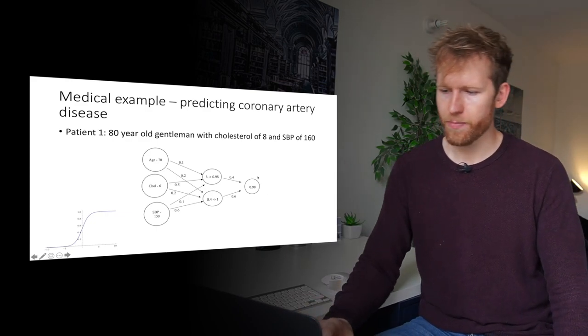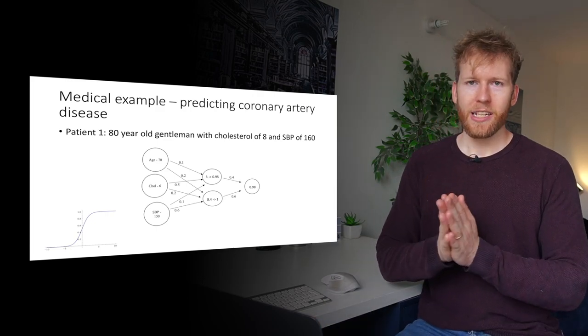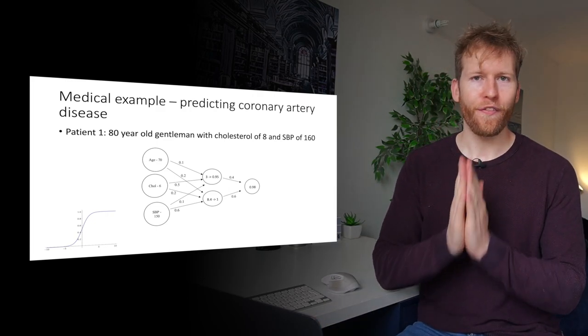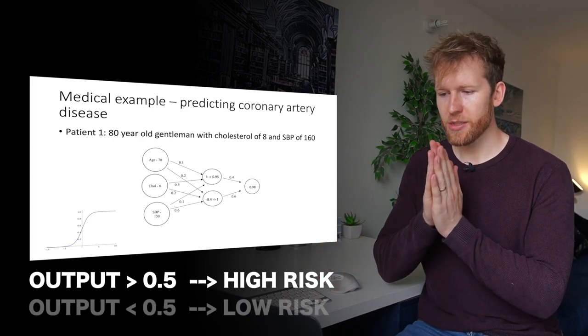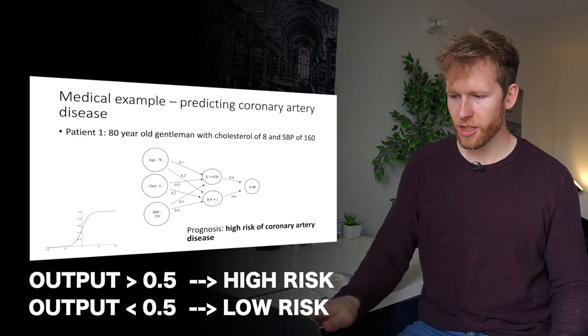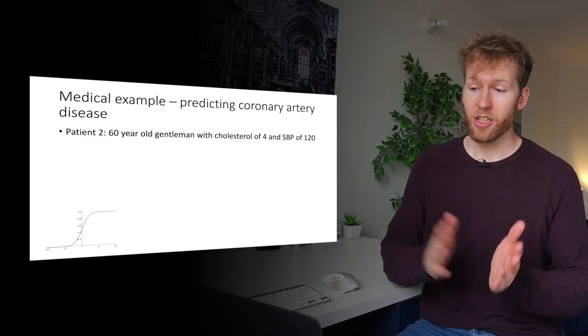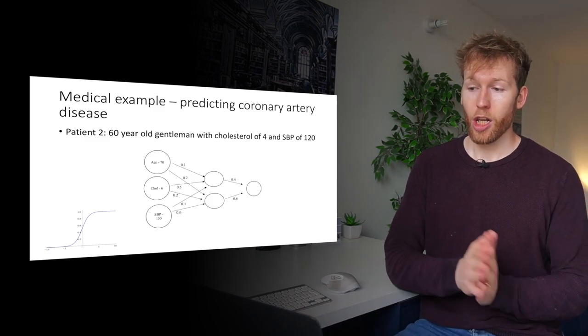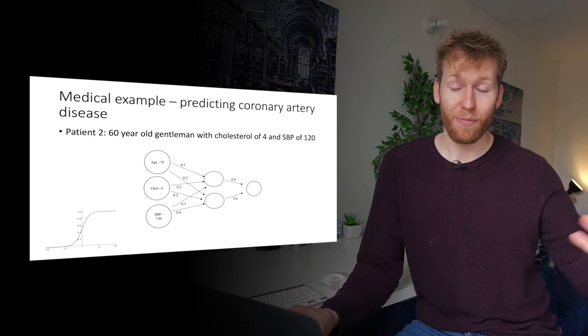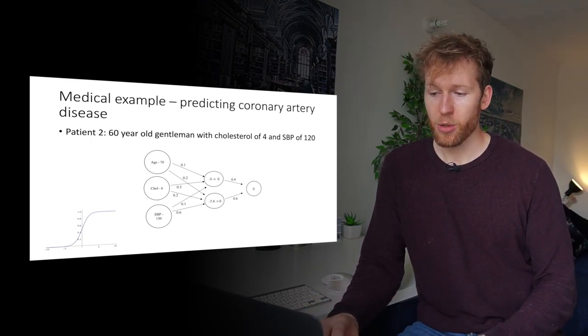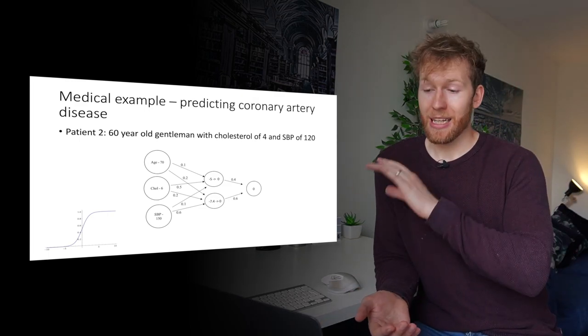We don't apply the activation function in this final layer, so that gives us 0.98. In our case, we will say that the threshold is 0.5. So if the output is above 0.5, we're predicting that they're high risk for coronary artery disease. If it's below 0.5, we're predicting low risk. So our prognosis is that they are high risk. And if we look at another example, this gentleman is younger, he has a lower cholesterol, and he has a lower systolic blood pressure. Essentially, we're going to get much lower values, we end up with zero, that's below the threshold of 0.5. So we're going to say that we think they're low risk.